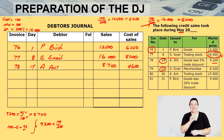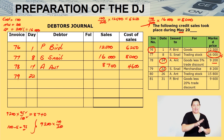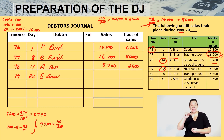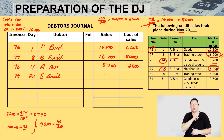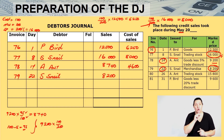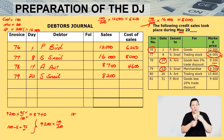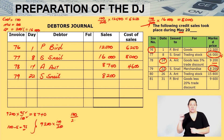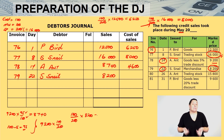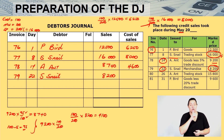On the 22nd, invoice number 79. We sold goods to S. Snail again for 8,200. Cost of sales — by now you know — it's 100 over 200 multiplied by 8,200, giving you 4,100.